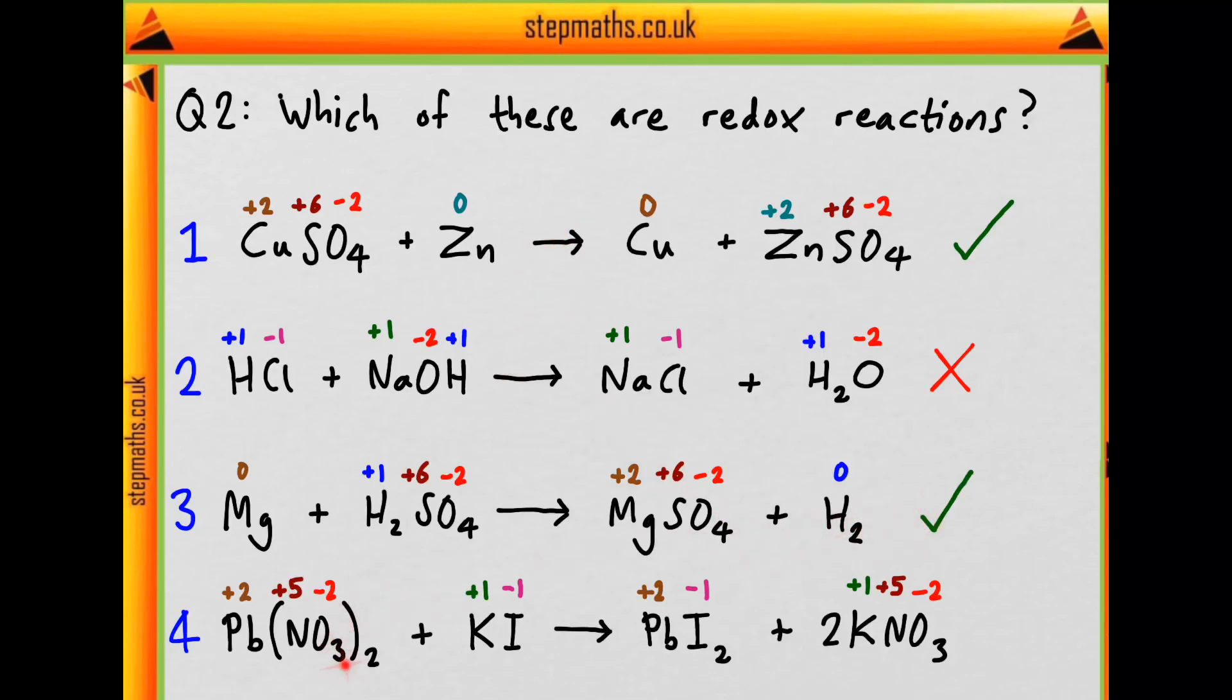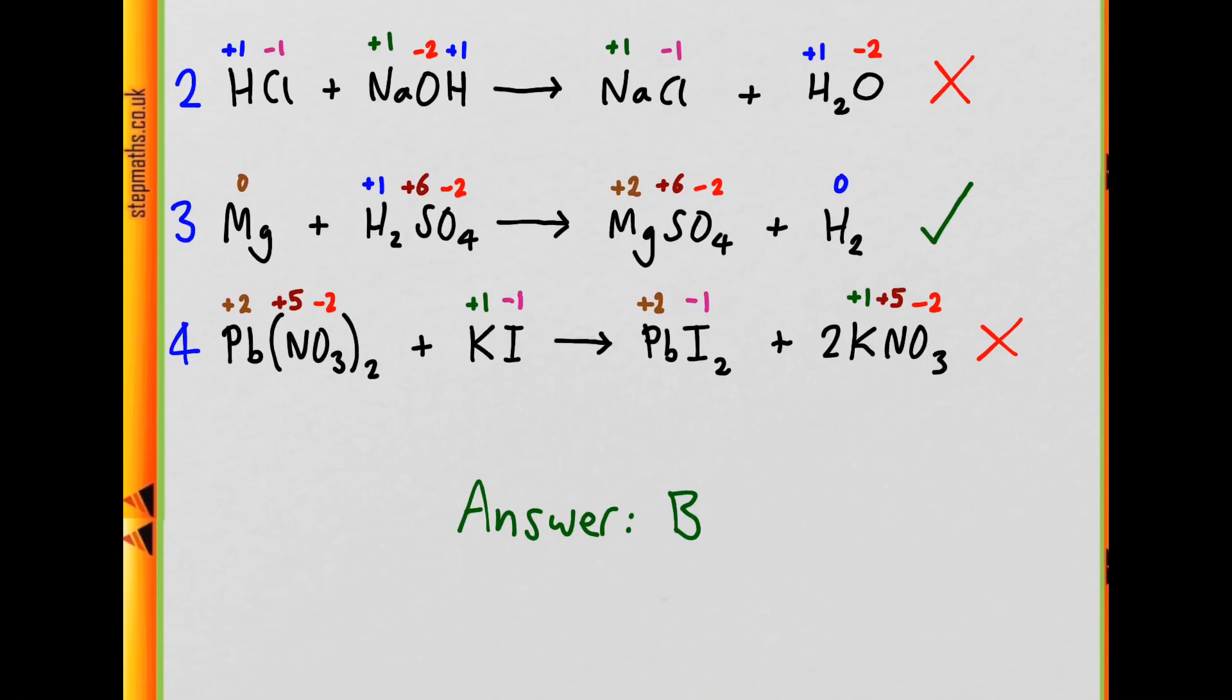And finally, in reaction four, the lead is always plus two, the iodine is always minus one, nitrogen is always plus five. And this is just a simple ion substitution reaction, so it's not redox. So we have one and three as redox reactions, which corresponds to answer B on the question paper.